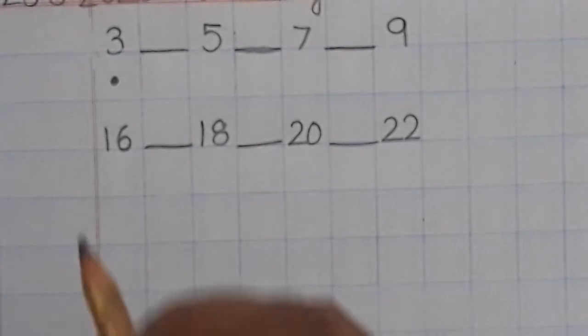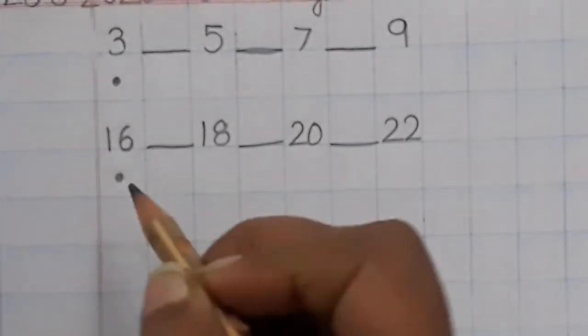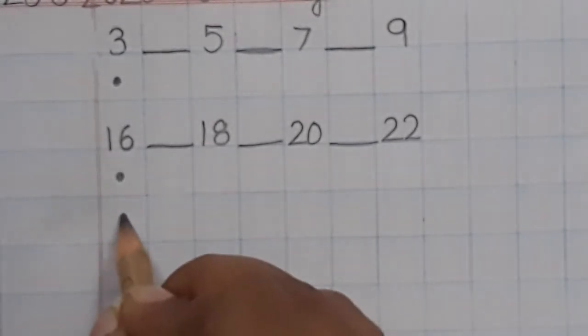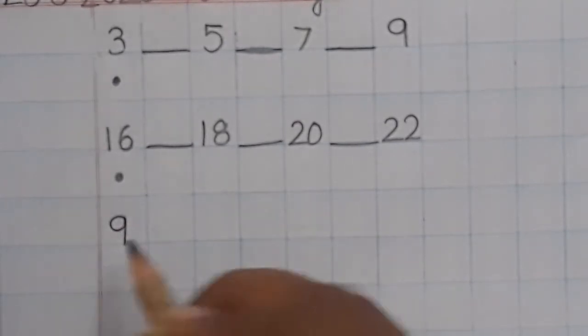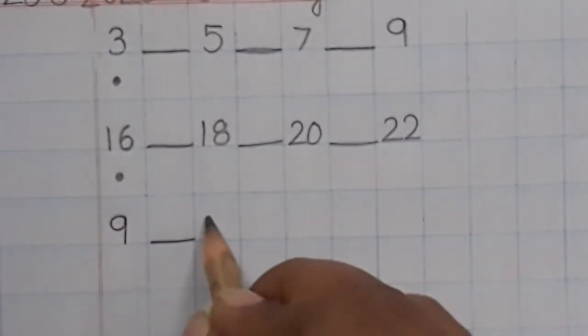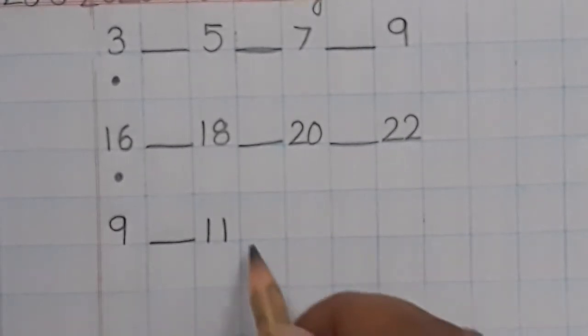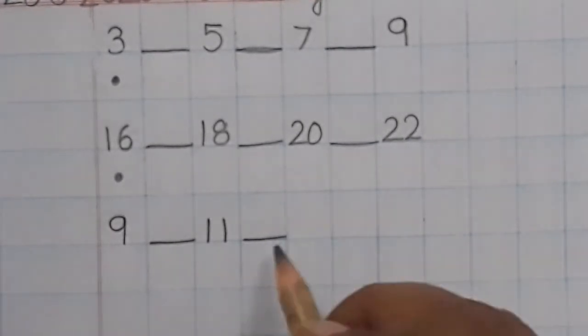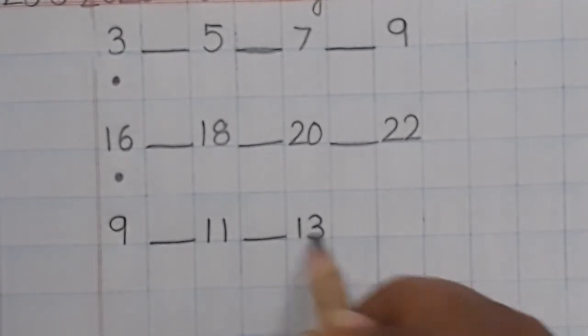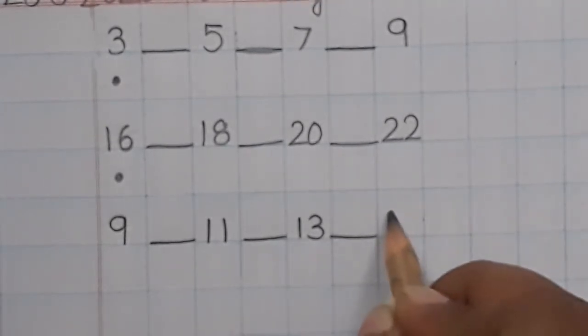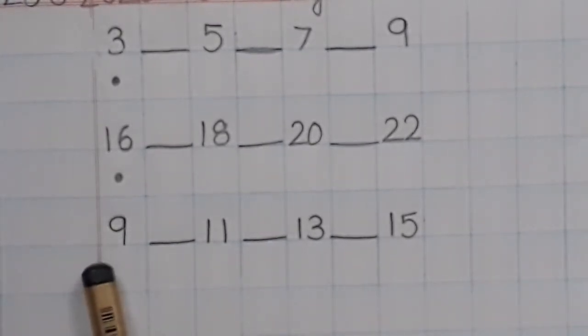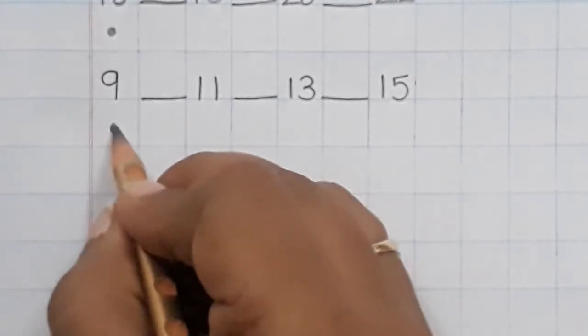I hope you all have done. Again put a dot, and now write number 9, 9 dash 11 dash 13 dash 15. 9 dash 11 dash 13 dash 15. Again below 9, put a dot.